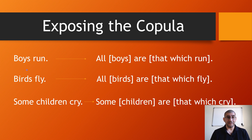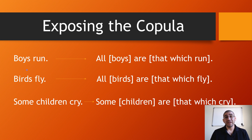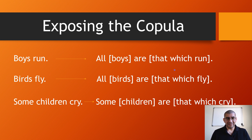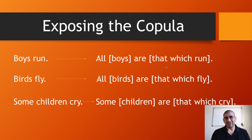Consider 'boys run.' What we're going to do to expose the copula is turn the predicate term into a relative clause — in other words, a big adjective. You don't need to fully understand the nature of a relative clause; this is logic, not English class. All that matters right now is that you develop the habit of doing this.